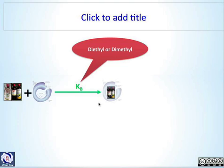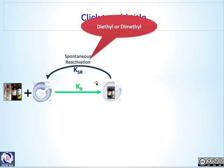When the organophosphate binds to the enzyme, the rate of initial binding — represented by the rate constant — is highly dependent on the type of organophosphate. Early binding inhibition is much faster in general for diethyls than for dimethyls. Once the enzyme is inhibited, there is the possibility of spontaneous reactivation, and this also depends on the nature of the bond between the organophosphate and the cholinesterase enzyme — so it too depends on the type of organophosphate.